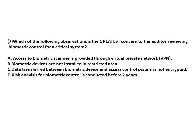Which of the following observations is the greatest concern to an auditor reviewing biometric controls for a critical system? Option A: access to the biometric scanner is provided through VPN — this is not a concern as VPN provides a secured environment. Option B: biometric devices are not installed in a restricted area — this is a concern. However, the greatest concern is that data transfer between the biometric device and the access control system is not encrypted — unencrypted data is the major concern.